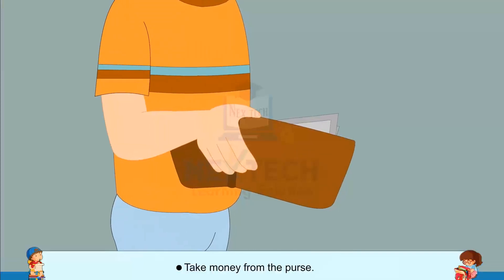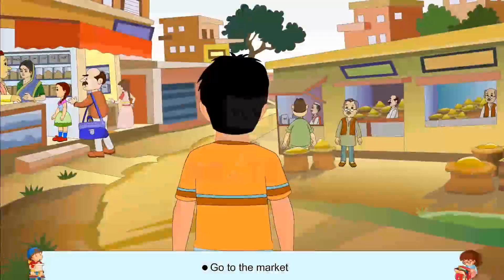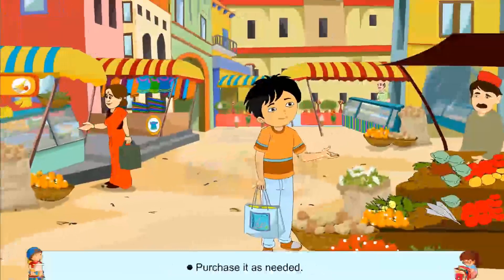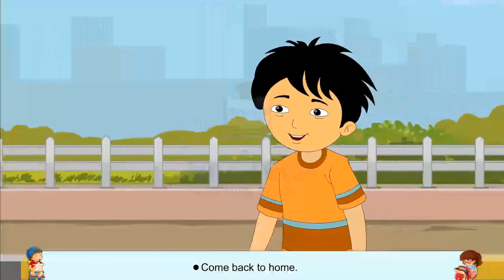Take money from the purse, open the door, go to the market, look for your required vegetables, purchase it as needed, come back to home.